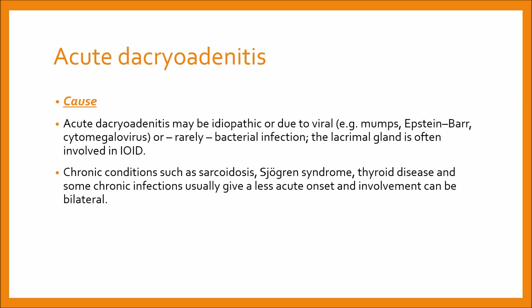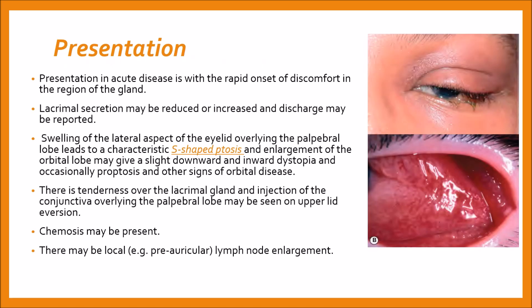Chronic conditions such as sarcoidosis, Sjogren's syndrome, thyroid disease, and some chronic infections usually give a less acute onset, and involvement can be bilateral. Patients present with acute disease with the rapid onset of discomfort in the region of the gland. Lacrimal secretions can be reduced or increased, and discharge may be reported.